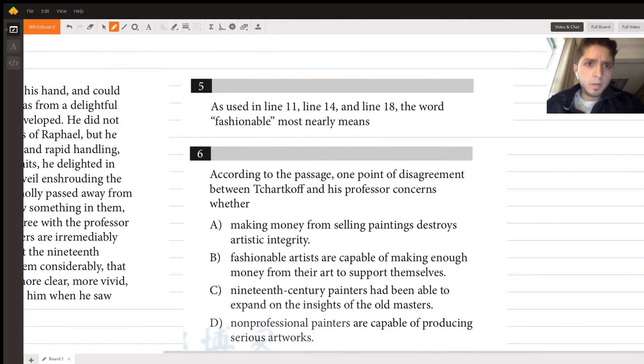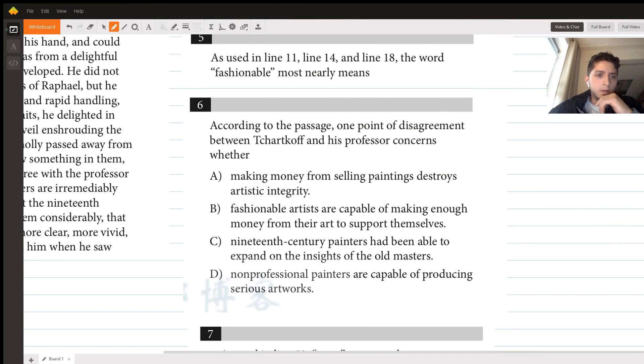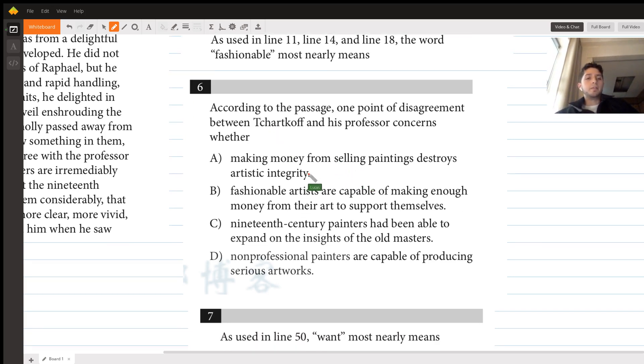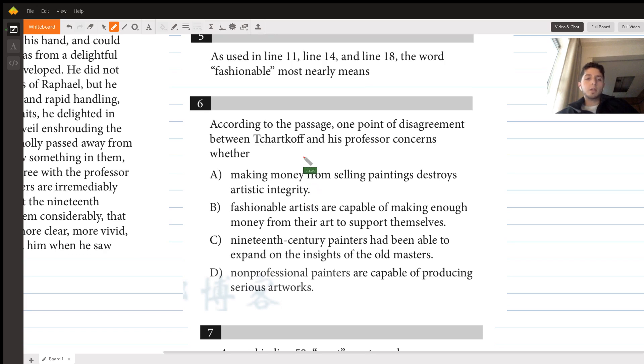This is question 6 from the SAT number 13. According to the passage, one point of disagreement between Tcharkoff and his professor concerns whether something. We have to choose our answer here. This one doesn't have any text or line reference.